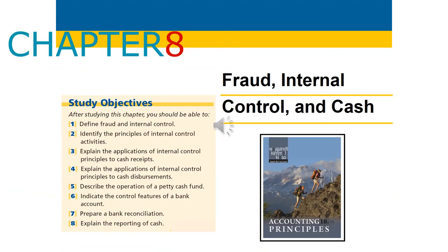Hello everyone, welcome back to Introduction to Financial Accounting One. Today we are looking at Chapter Eight, which covers fraud, internal control, and cash management. In this chapter we will focus on eight learning outcomes: define fraud and internal control, identify the principles of internal control activities, explain applications of internal control principles to cash receipts, explain applications to cash disbursements, describe the operation of a petty cash fund, indicate the control features of a bank account, prepare a bank reconciliation statement, and explain the reporting of cash.